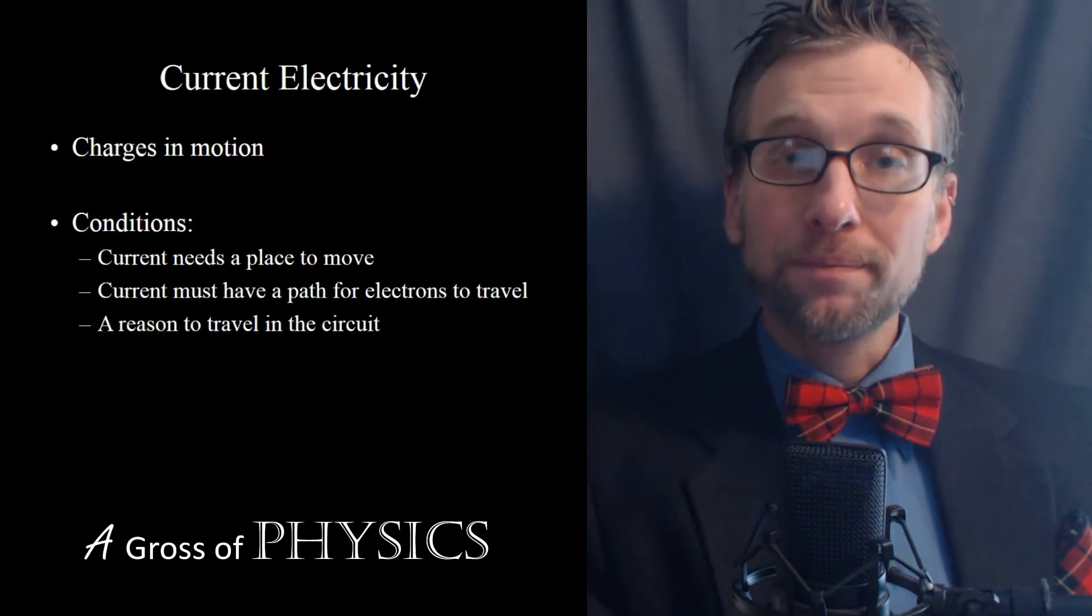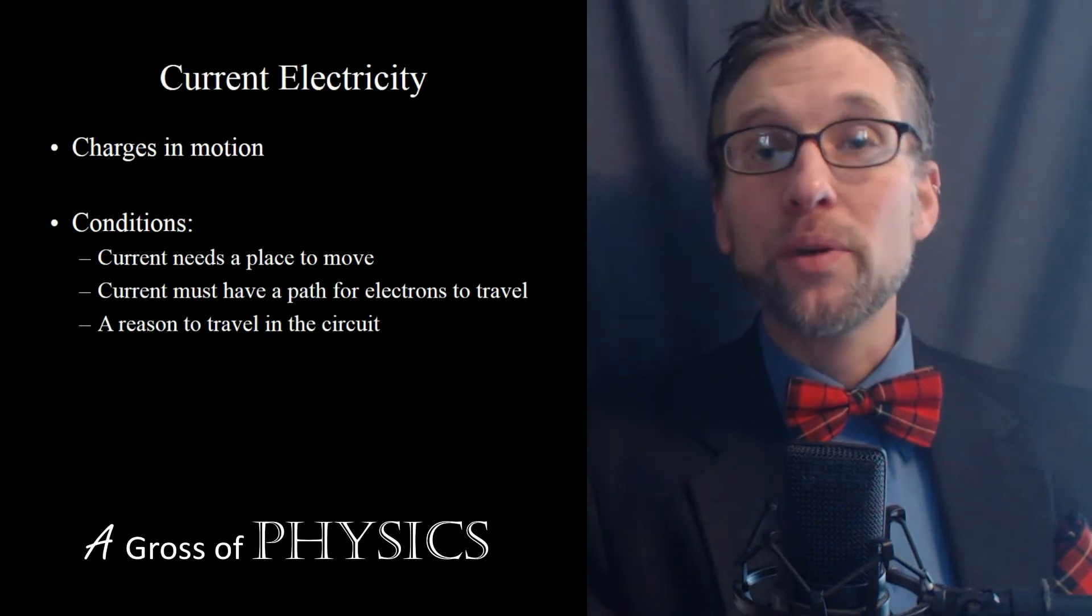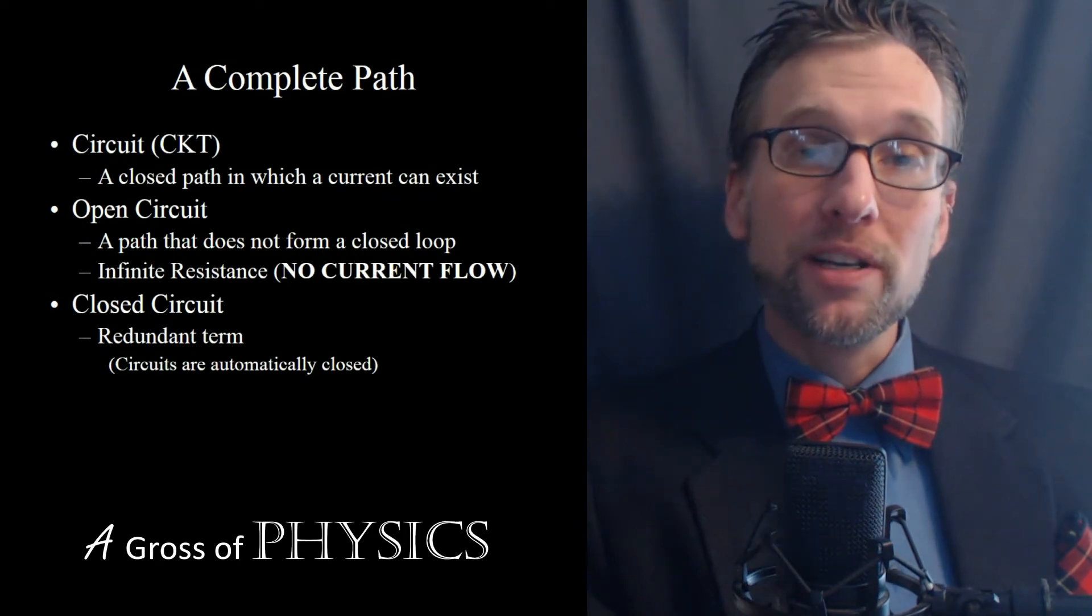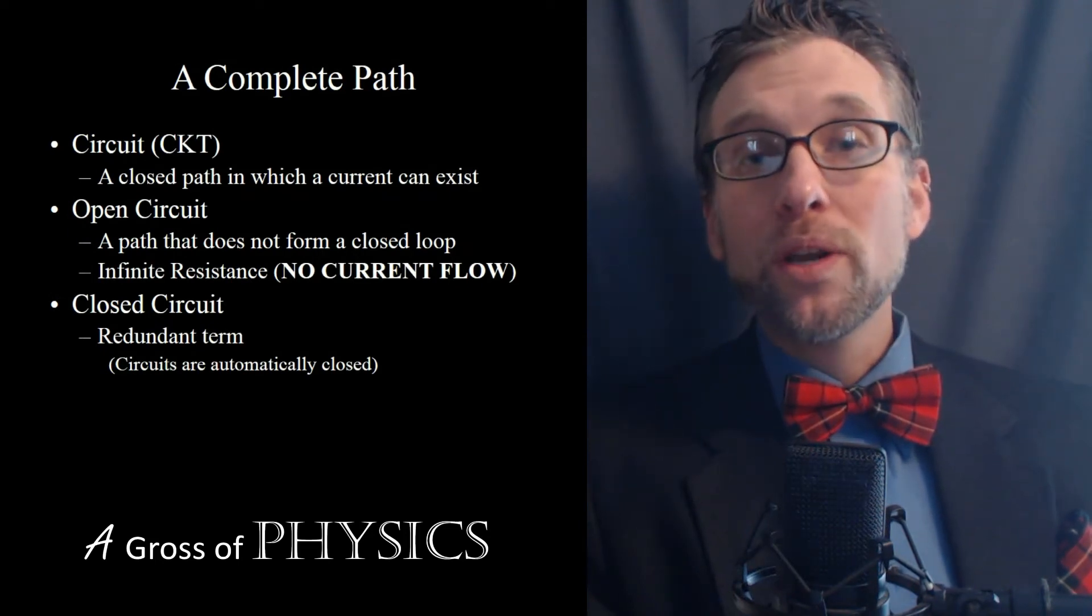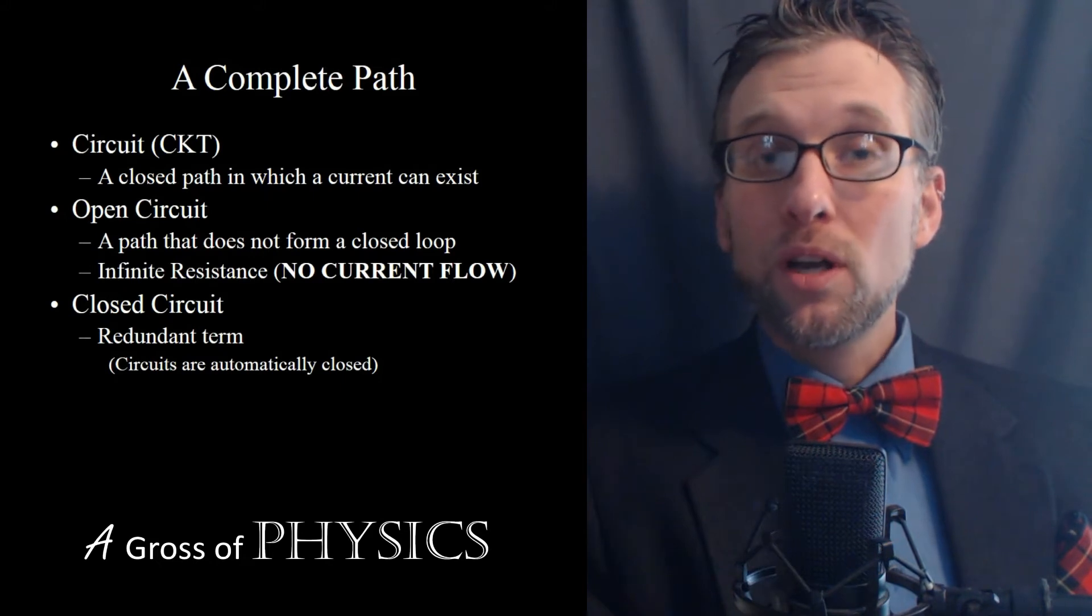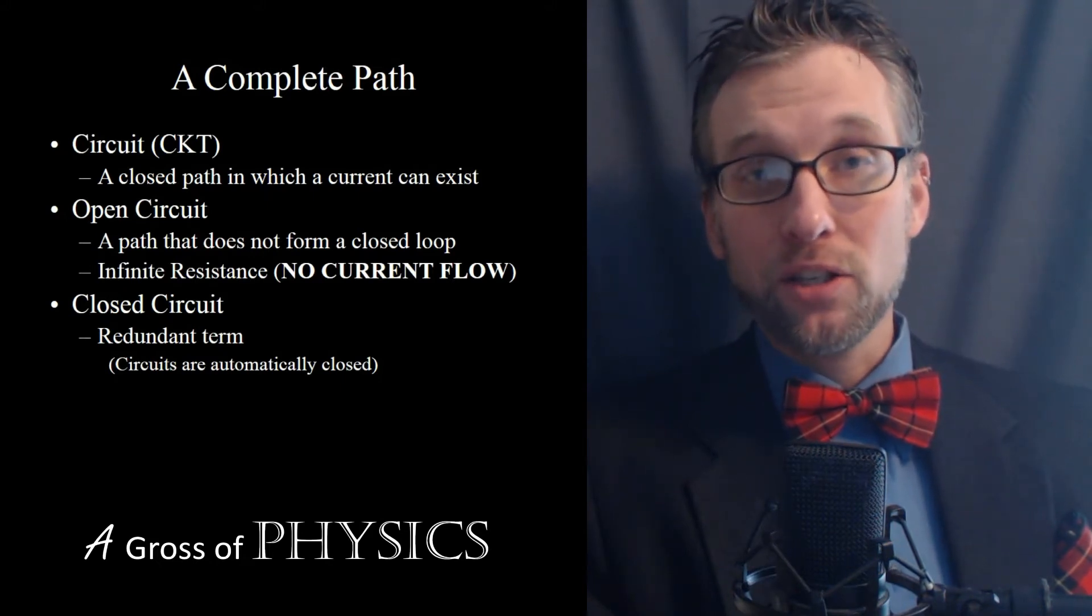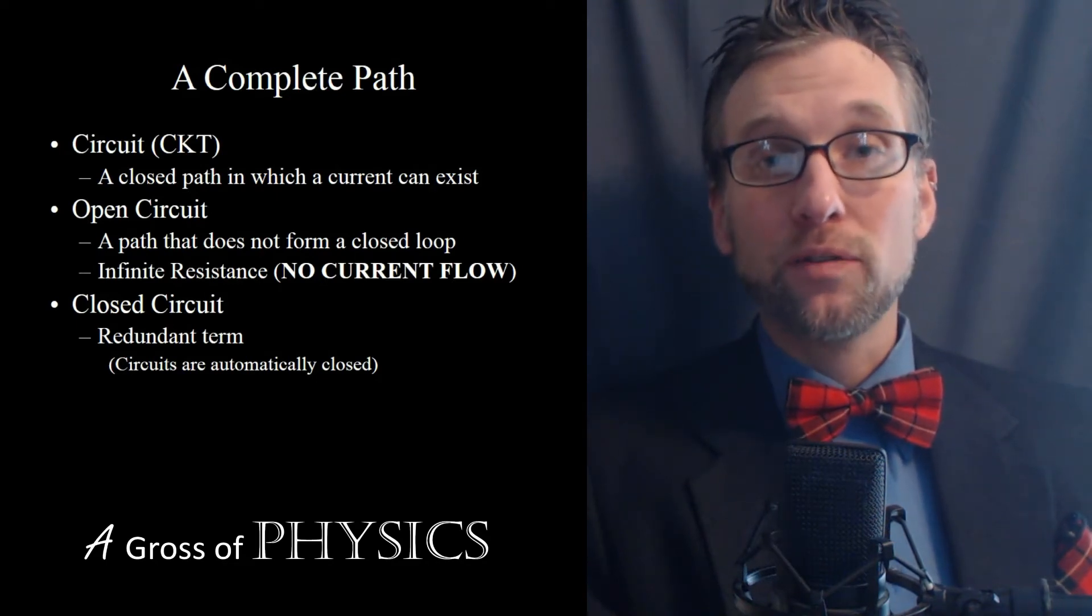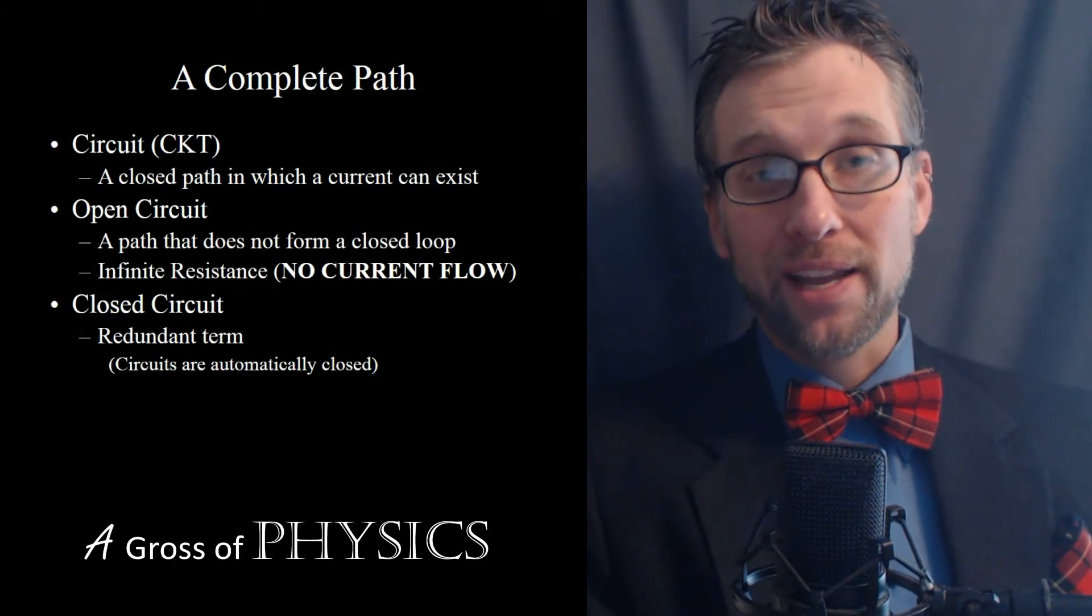Now for the first one, we need a complete path, and we call that complete path a circuit. The abbreviation for circuit is CKT, and what we need is a closed loop. So if you have just a single wire, that wire needs to connect the two ends to itself, and that will allow the electrons to flow in a complete circular path in that case.